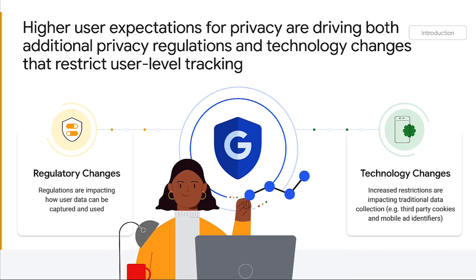Evolving user expectations and regulatory and platform changes are challenging the ability to maintain accurate measurement. People's expectations of ads privacy have shifted — people are increasingly concerned about how their online information gets collected and used for advertising. Responding to these concerns, regulatory bodies across the globe are drafting new privacy laws and updating existing regulatory frameworks that are restricting the digital ads ecosystem. At the same time, platforms such as browsers and mobile operating systems have announced or implemented new policies to change the way user data is captured, shared, and measured. They are shifting away from mechanisms that track users across sites and apps by restricting third-party cookies and mobile ad identifiers.